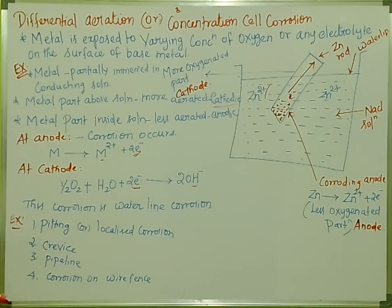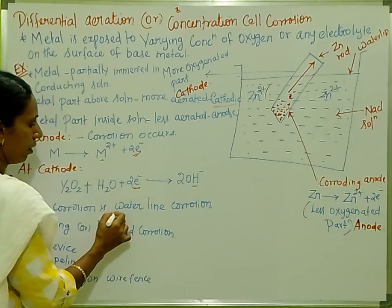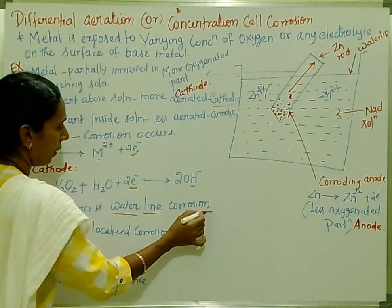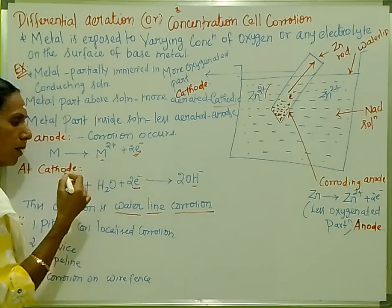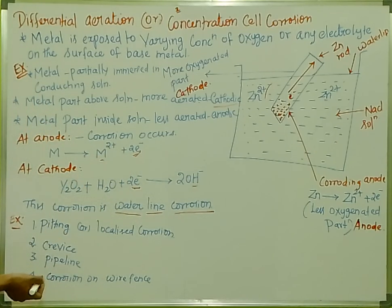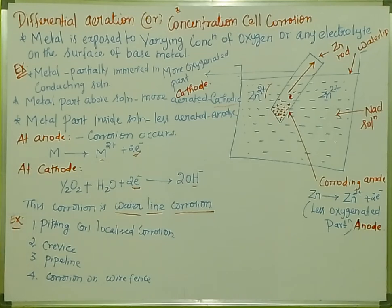What is waterline corrosion? Waterline corrosion is an important example of differential aeration or concentration cell corrosion.